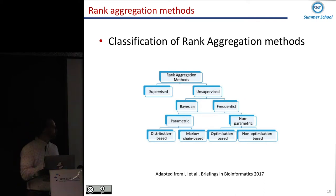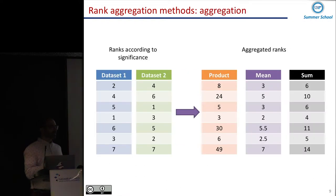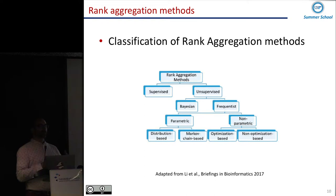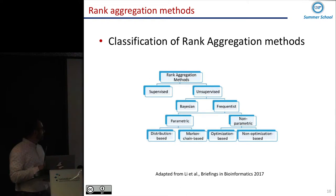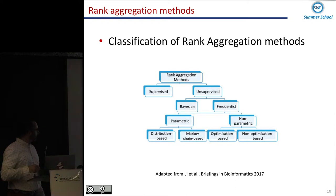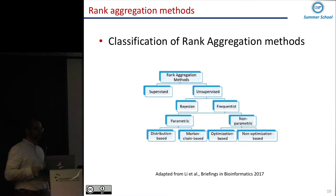If you want to read more about rank aggregation, there are several other more complicated methods. Here we just present a vanilla case, but several other things can happen — for example, you may not have exactly the same measurements in all studies, so you only have overlapping measurements. A gene may be measured in two studies and another only in eight — how do you compare the ranks? In that case you may want to use a Bayesian approach where you place a prior on the posterior rank of an element. I would suggest reading the review paper referenced at the end of the presentation.